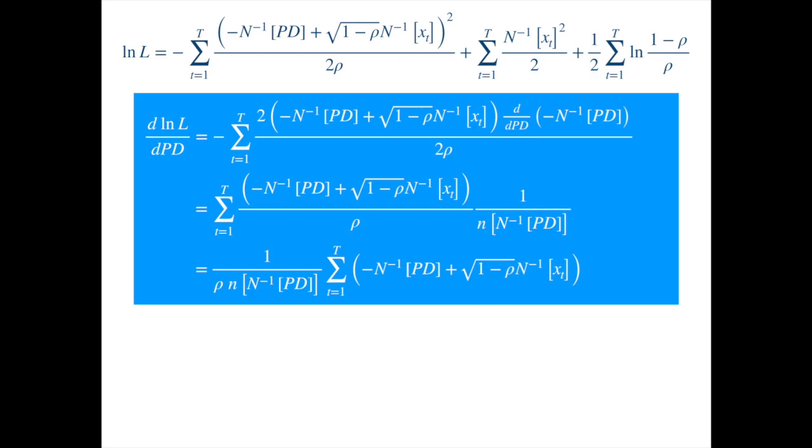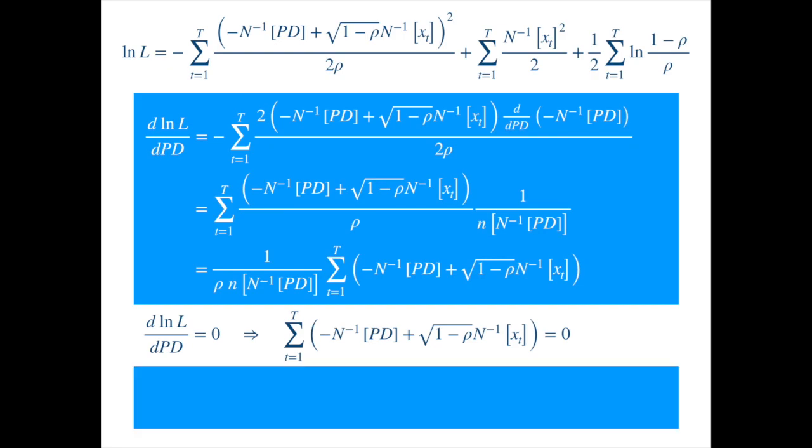Setting the derivative equal to zero we get. Applying the summation to both terms and taking the constant out of the summation we get. Notice, summing a constant T times is equal to T times the constant, so that explains the first term, and rearranging we get.